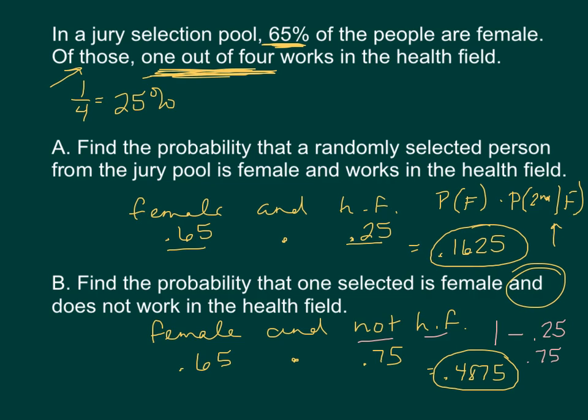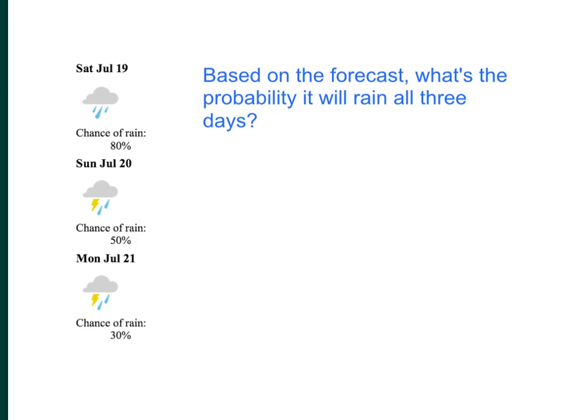So when you have multiple events, that's just one example there. All right, let's look at another kind of, just our last sort of multiplication property probability. So what I have here is something your app on your phone might tell you for the next three days, a weather forecast. So I've got the chance of rain each day. So notice Saturday, July 19th, chance of rain of 80%, then 50%, then 30%. And my question is, based on that forecast, what's the probability it will rain all three days?